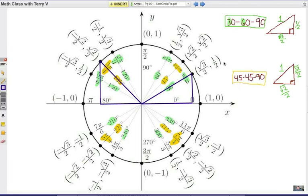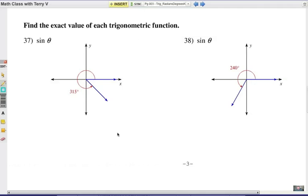Problem set 3, here we go. Alright, now here are a couple quick examples. We give you the angle and want to know the sine value on number 37 and the sine value on number 38. Give it a try. Figure out what kind of triangles they are and go from there.